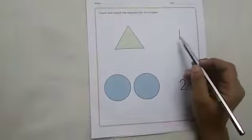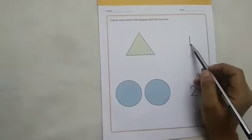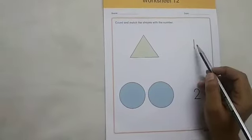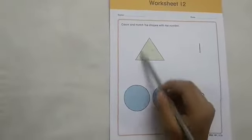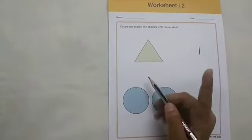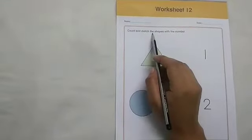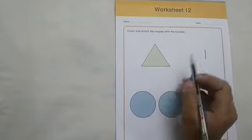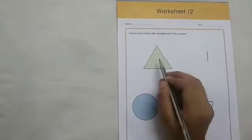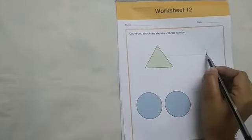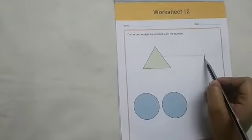Tell me which number is this? This is number 1, which I taught you in last class. How many triangles are here? One triangle. Count and match the shape with number 1. One triangle — number 1. Make a sleeping line to match one object, one number.